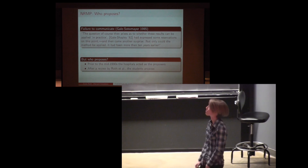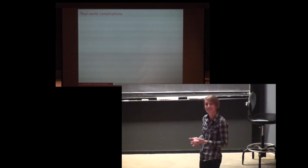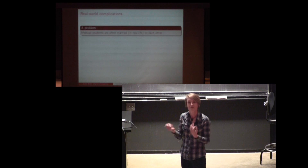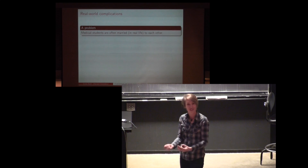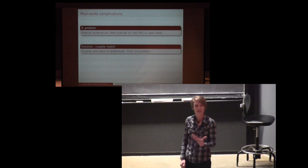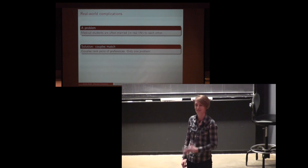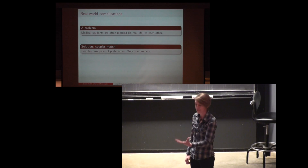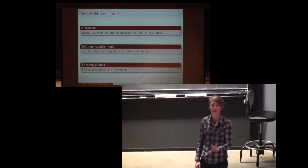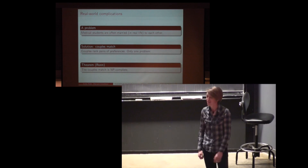The corollary is that your friends in medical school should not falsify their residency preference forms — they need to tell the truth. There are some real-world complications, and the most interesting to my mind is that medical students are often married to each other. The existing implementation allows for this via something called the couples match, where a couple is allowed to submit ranked pairs of preferences. The only problem is it's actually an NP-complete problem and might not have a stable solution. Thank you.